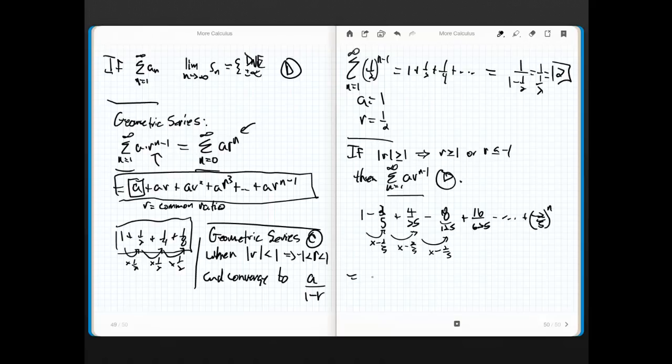So this guy right here can be written as the sum as n goes from 0, since I wrote this as n, from 0 to infinity of a, which is the first term, 1, times negative 2 fifths to the n. Easy. So the first thing that we always want to do is recognize that it's a geometric series. Sweet. Now let's see if it converges or diverges. It's easy. What's a? What's my first term? Well, bam. It's 1.